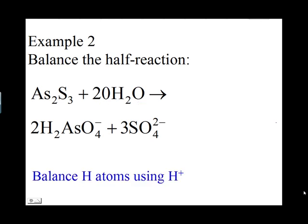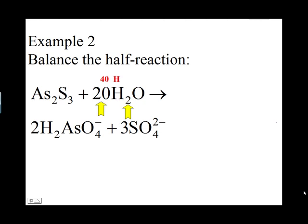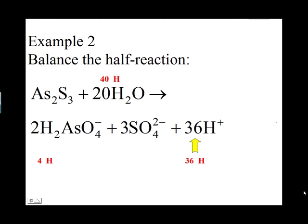Next, balance the hydrogen atoms using H+. On the left side, twenty water molecules have a total of forty hydrogen atoms. On the right side, two H2AsO4⁻ have four hydrogen atoms, and none in the sulfate ion. To balance, add thirty-six H+ ions to the right side, giving a grand total of forty hydrogen atoms on both sides.